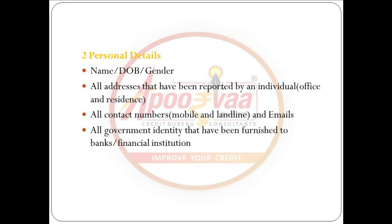2. Personal details such as name, date of birth, gender, all addresses that have been reported by an individual — office or residence — all contact numbers, mobile or landline, and emails, and all government identity documents that have been furnished to banks and financial institutions.